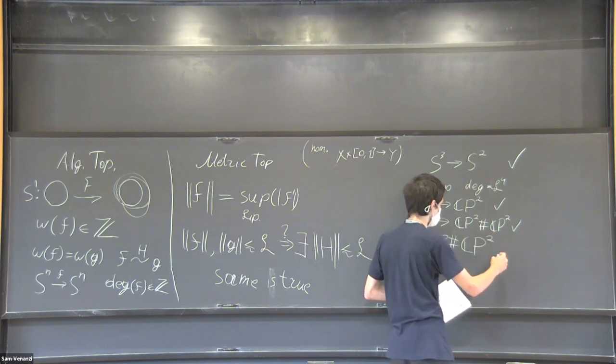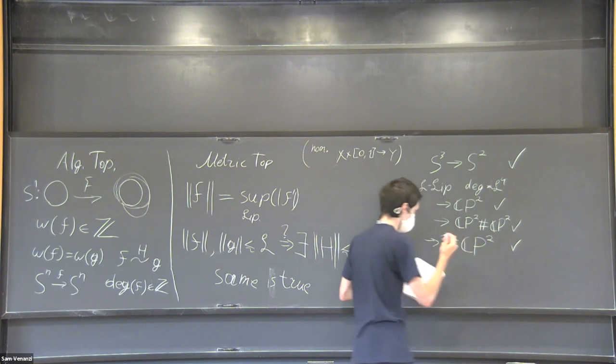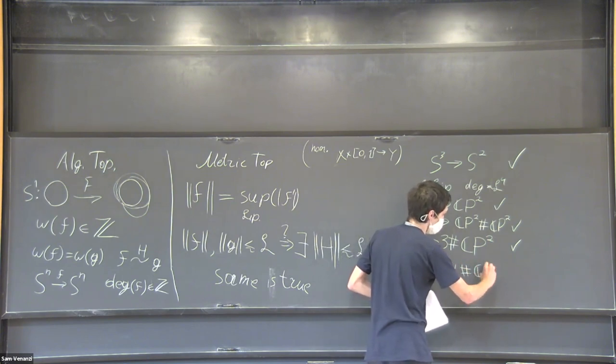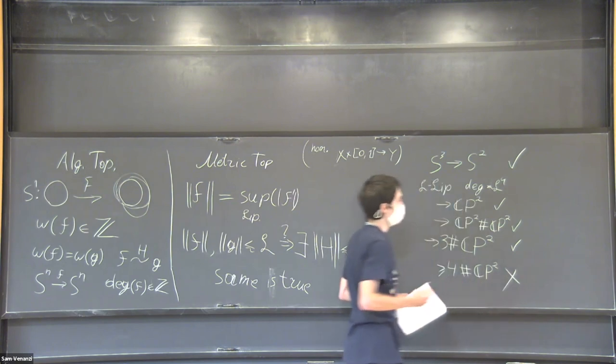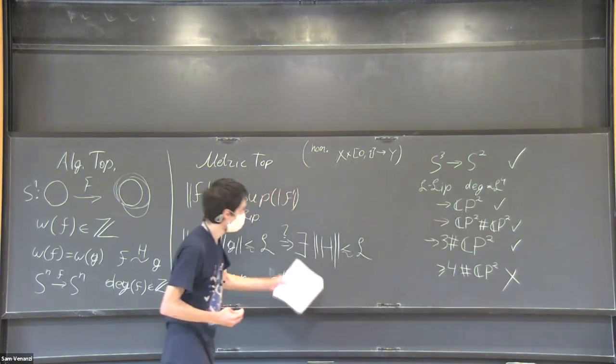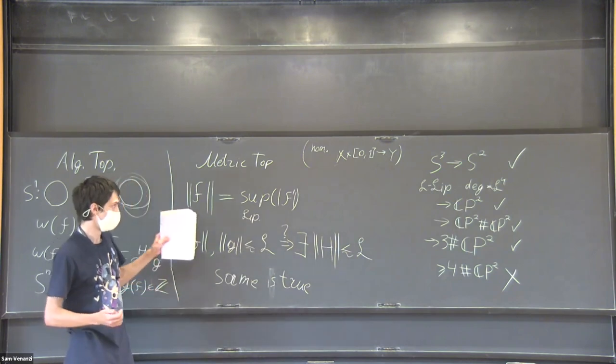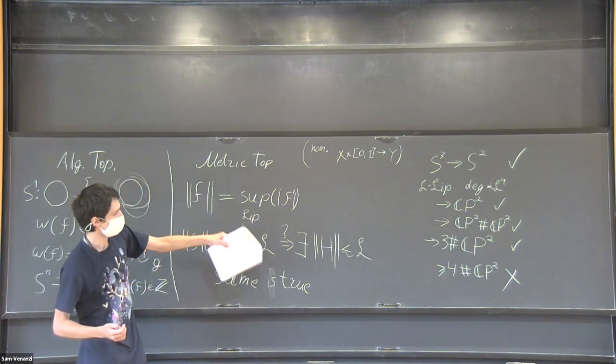Or three of them. And you might be wondering what am I doing and why am I listing a whole bunch of spaces right now. The point is that if you take more than three CP²s and take their connected sum, then it actually fails. You cannot always find linear homotopies for three connected sums of those CP²s.